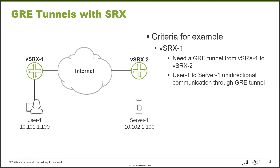In this topology we have two devices: vSRX1 and vSRX2. Both connect to the internet using interface GE-0/0/1. vSRX1 connects to User One with interface GE-0/0/0, and vSRX2 connects to Server One with interface GE-0/0/0. We need to ensure communication can happen between User One and Server One, and to facilitate that we're going to create a GRE tunnel connecting vSRX1 and vSRX2.